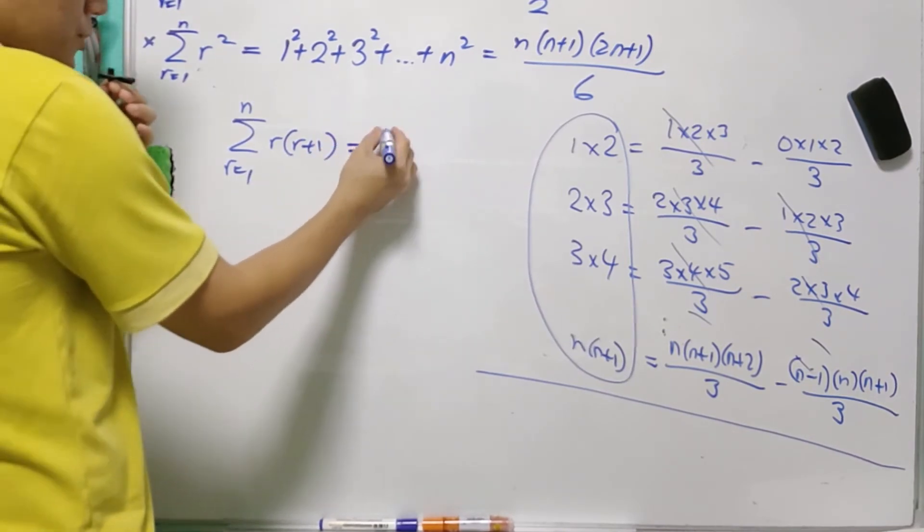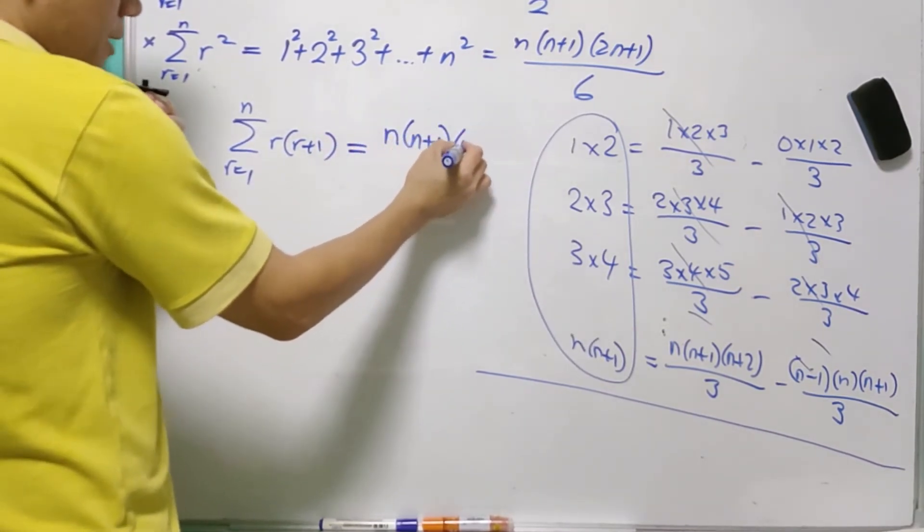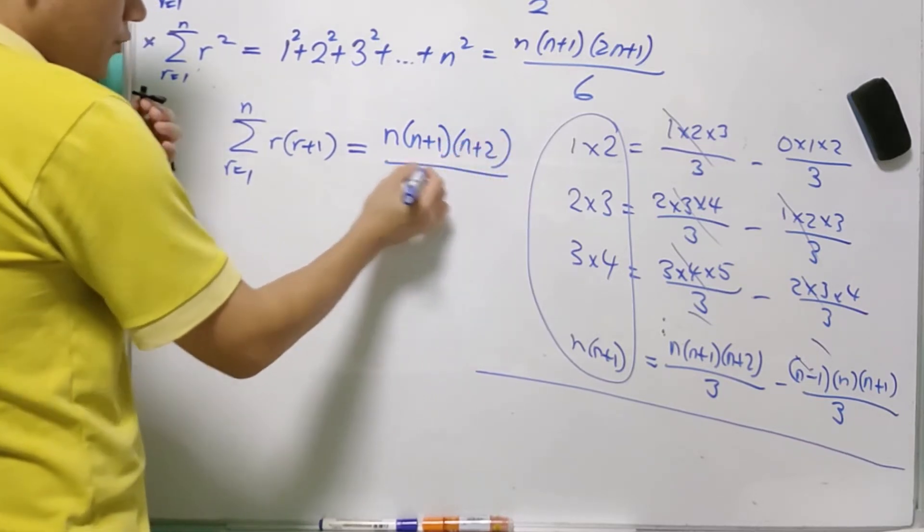So it means that the sum of this can be written in this method, and it is equal to n(n+1)(n+2) over 3.